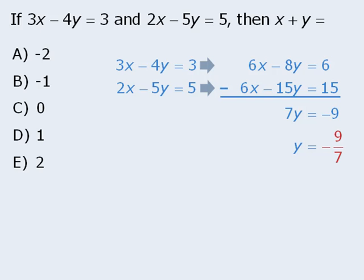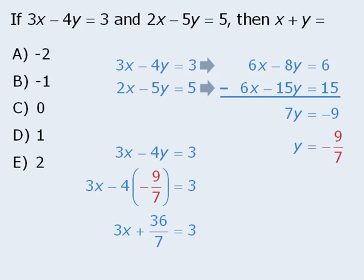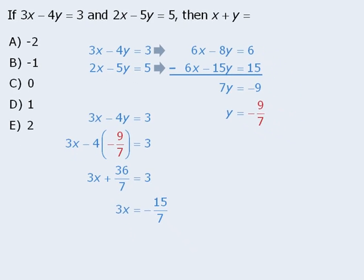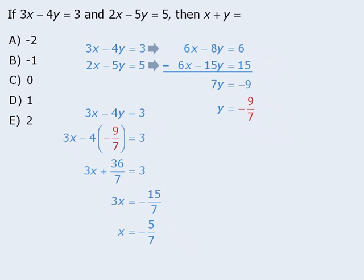Now that we know the value of y, we can plug this value into any of the above equations. Let's use this equation, which we can move down here. So when we replace y with negative 9 sevenths, we get an equation that we can solve for x. First we'll simplify the left-hand side. Then we'll subtract 36 over 7 from both sides. And finally we'll divide both sides by 3 to get x equals negative 5 sevenths.